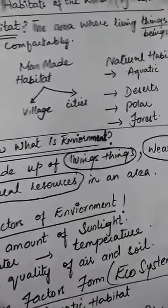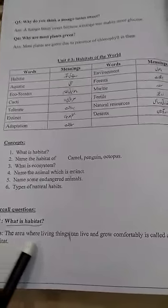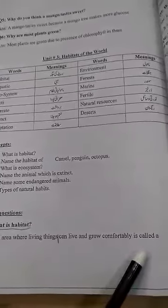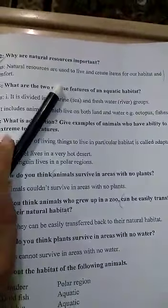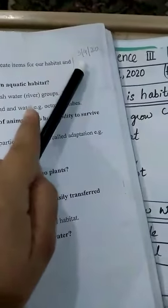Students, now open your notes. Question number one: What is habitat? The area where living things can live and grow comfortably is called a habitat. Question two: Why are natural resources important? Natural resources are used to live and create items for our habitat and comfort. Please mention today's date, learn these questions, and highlight your meanings. Thank you students, Allah Hafiz.